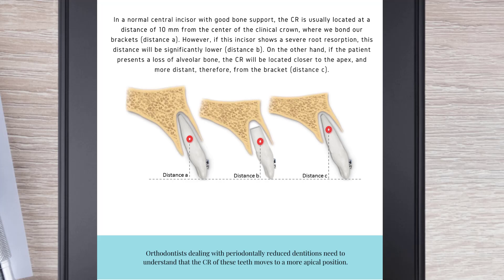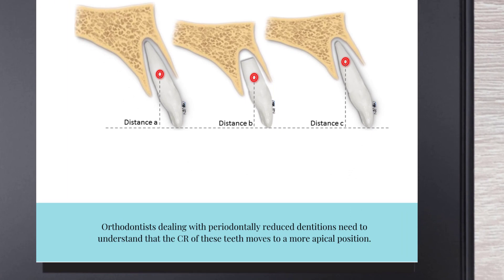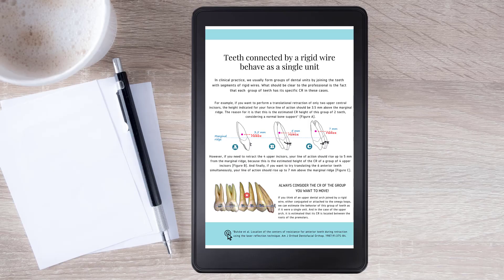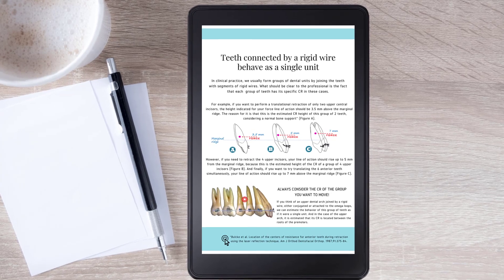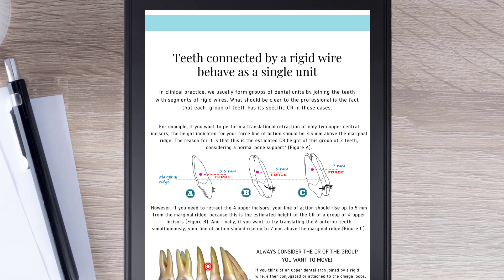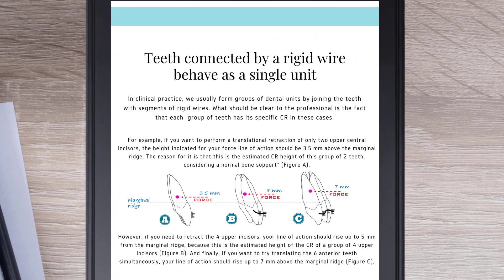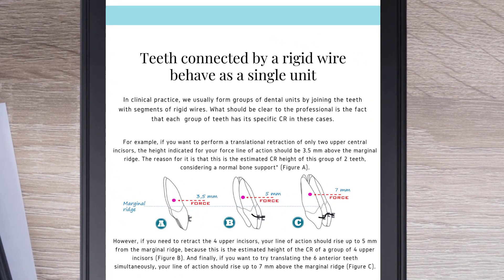Orthodontists dealing with periodontally reduced dentitions need to understand that the CR of these teeth moves to a more apical position. In clinical practice, we usually form groups of dental units by joining teeth with segments of rigid wires. What should be clear to the professional is the fact that each group of teeth has its specific CR.